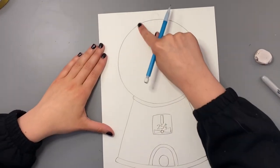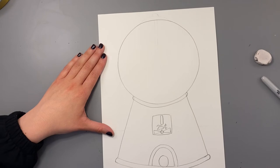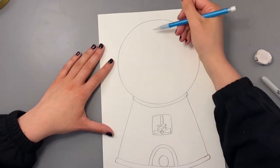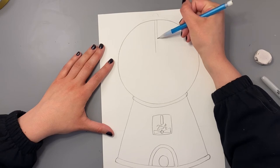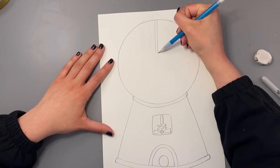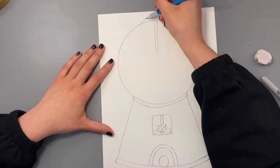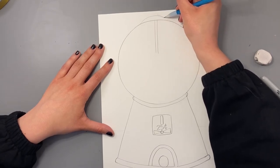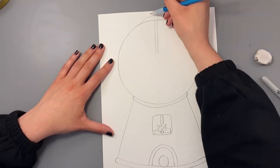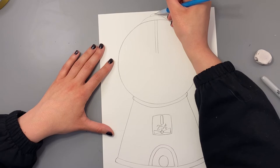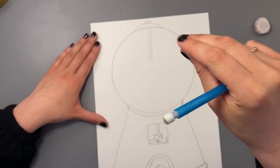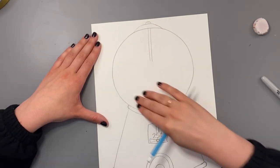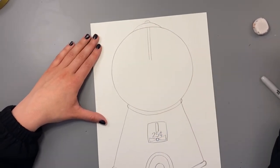Now we need to draw some details on the top of our gumball machine. I'm going to draw a rod down into the circle using two straight vertical lines. And then a slightly curved line at the top of the gumball machine. And then a little rainbow line on top of it. This would be the part that you could take off of the gumball machine. And then there'd be an opening and you could refill it with more gumballs.